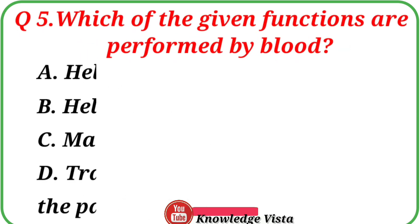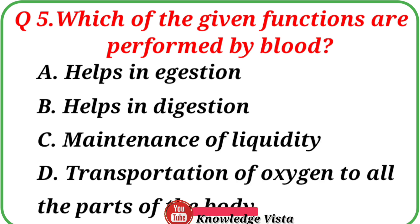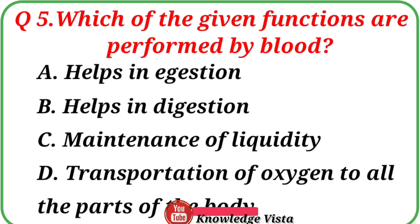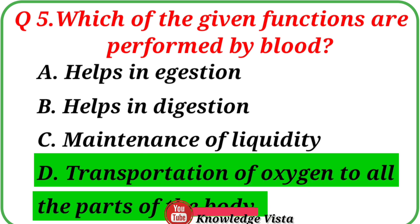Question number 5: Which of the given functions are performed by blood? Option A: Helps in ingestion. Option B: Helps in digestion. Option C: Maintenance of liquidity. Option D: Transportation of oxygen to all the parts of the body. The correct answer is option D. Transportation of oxygen to all parts of the body is the main function of blood.